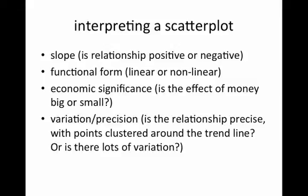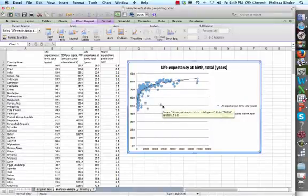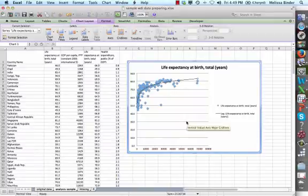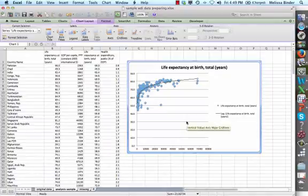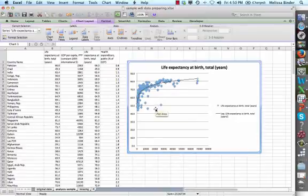The last thing you look at in interpreting a scatter plot is the variation or precision. Is the relationship precise with points clustered around the trend line, or is there lots of variation? So let's go back out to the graph and take a look at it. I see some points that are kind of way out there. So this is eyeballing. Most of the points are clustered near the line. Again, this is interpretation while you're just eyeballing it. Later on, when we do a regression analysis, we'll have a number that you can point to that will really help you say whether it's precise or not. But I can tell you this is pretty precise. There's only a handful of countries that are far away from the line.